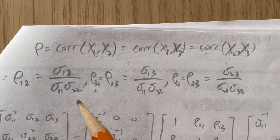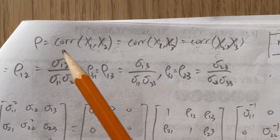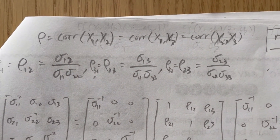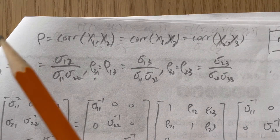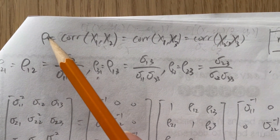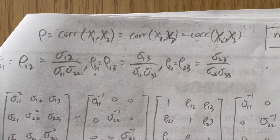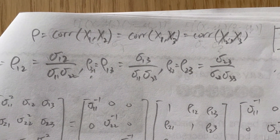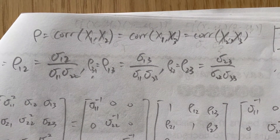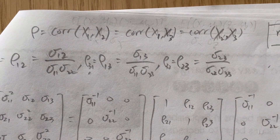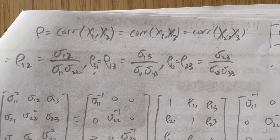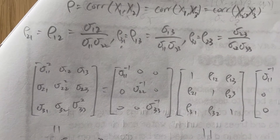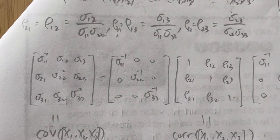When you first look at this problem, you think about correlations and covariance. The problem comes down to: what values of rho will make the covariance matrix a valid covariance matrix? That means it has to be a positive semi-definite matrix. So we need to find rho such that the covariance matrix is positive semi-definite — that's how we solve it.